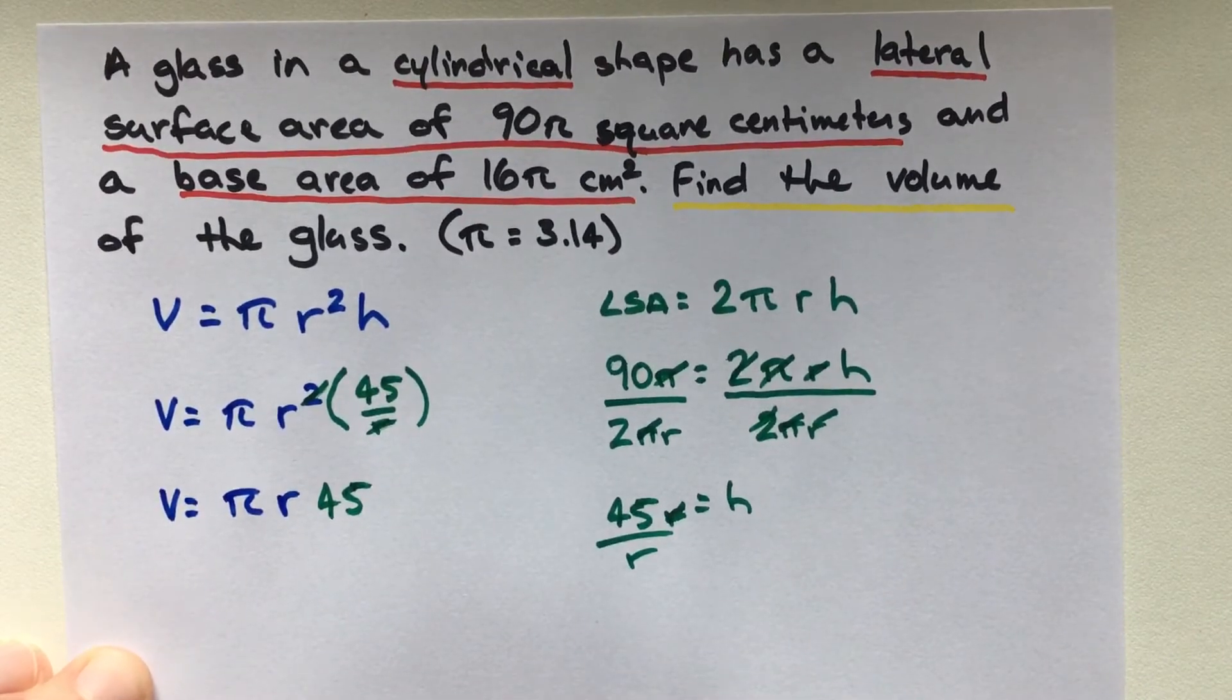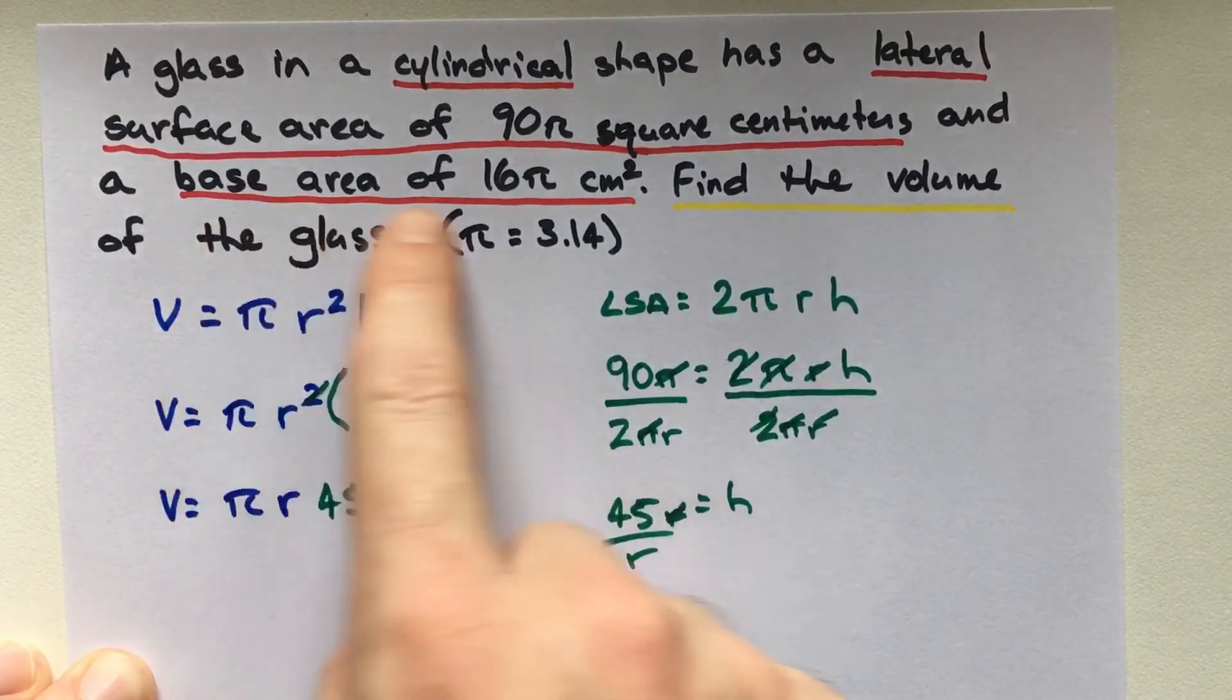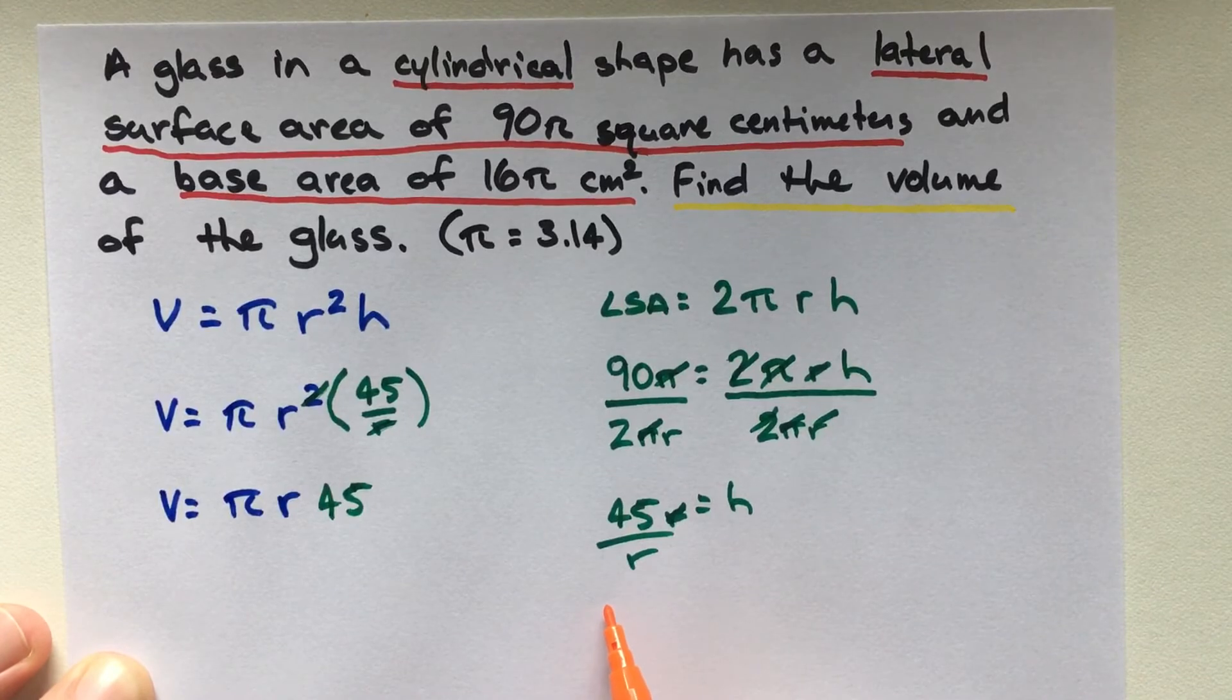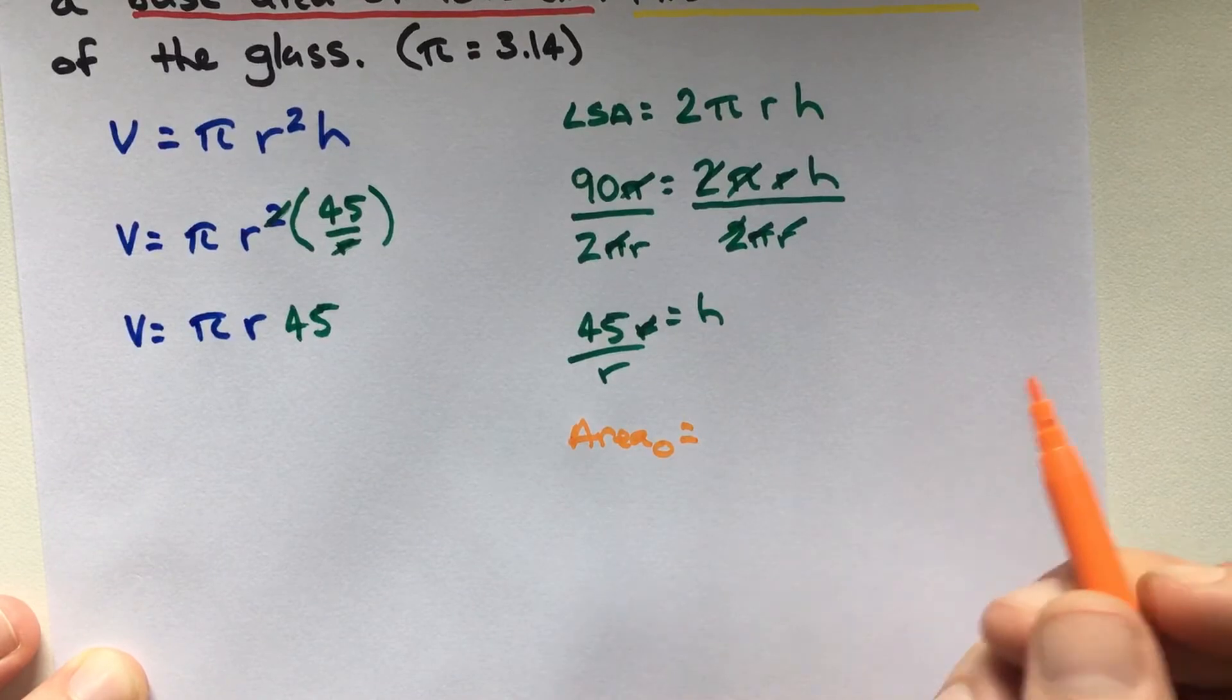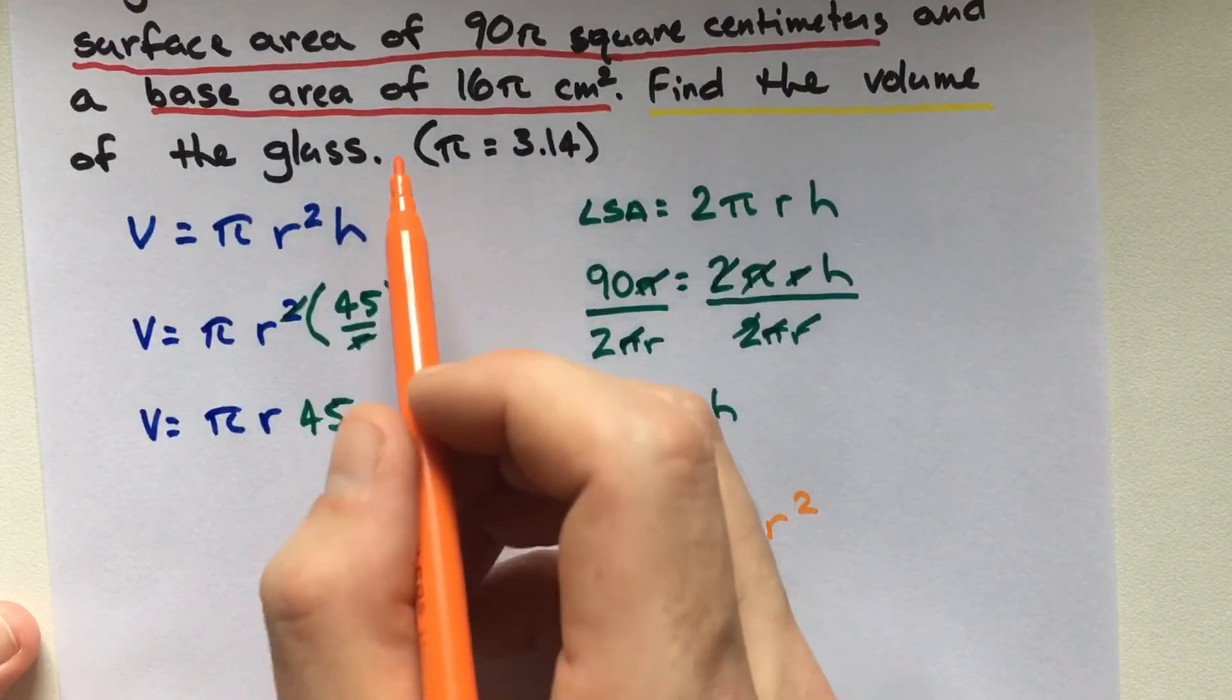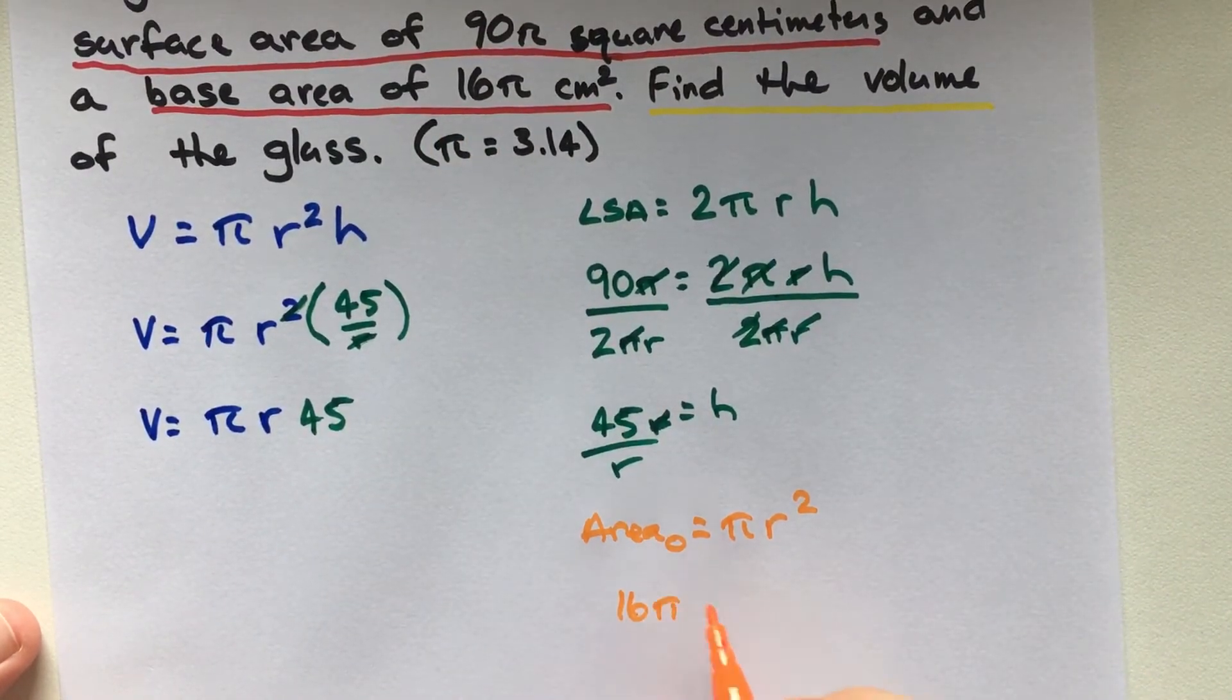So we still need to find our radius. We can do that by looking at our base area of our cylinder. We know the area of a circle is equal to π times radius squared. And we know my area is 16π. So let's take 16π equals πr².